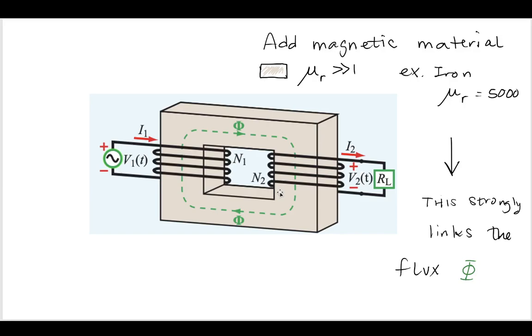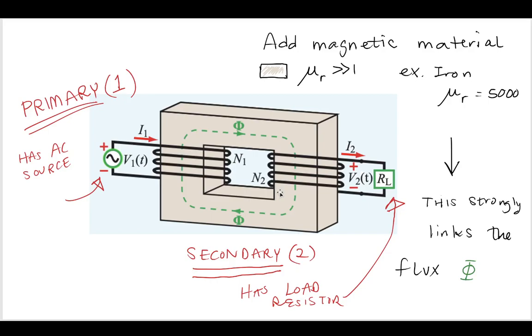It's going to link through that magnetic material and link to that second set of coils that's touching a resistor. We call this on the left-hand side the primary and that has an AC source, so the primary side has a source and the right-hand side is secondary. It has a resistor. We denote these with subscript one and subscript two for the number of coils, voltage, and currents.